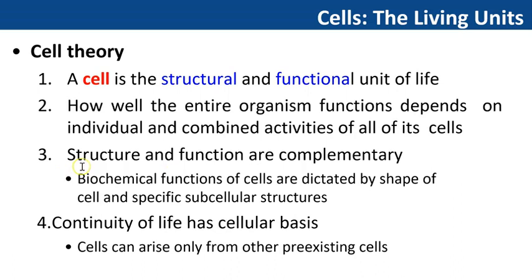Which means the activity of an organism depends on the total activity of independent cells. The third theory says structure and function are complementary. For this theory, let's look at the RBC's structure and function. RBCs or red blood cells are very small, disc-shaped, very flexible cells that do not have a nucleus and organelles, but they are full of hemoglobins. RBCs function is to carry oxygen and also carbon dioxide. They are so flexible that they can pass through the tiny blood vessels. Their disc shape or biconcave shape increases their surface area so they are able to transport oxygen. So in this way, the structure and function are complementary.